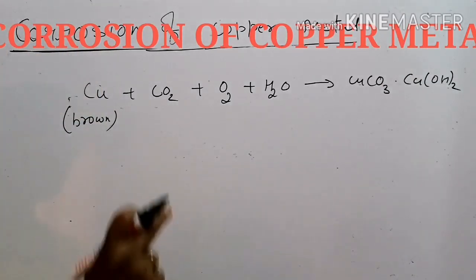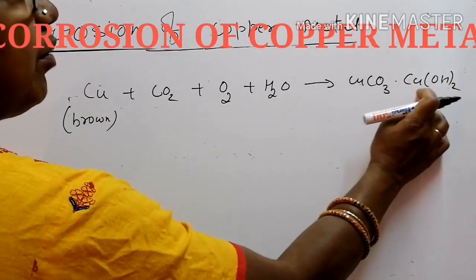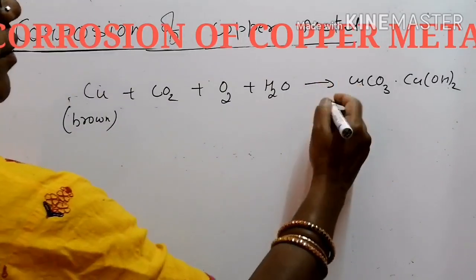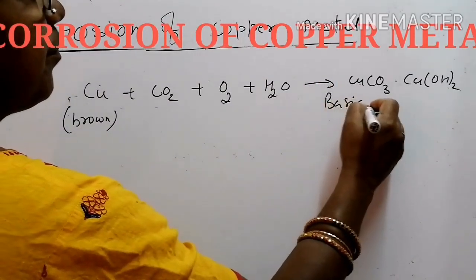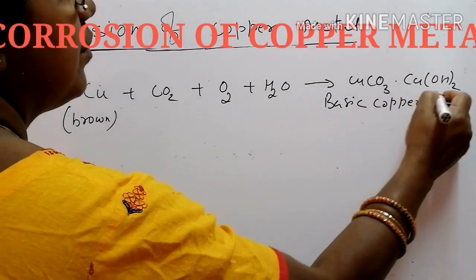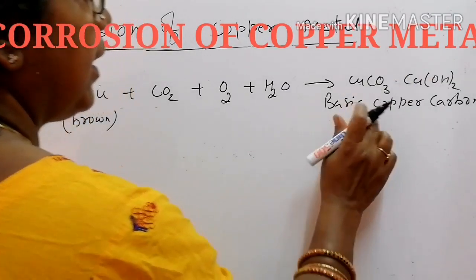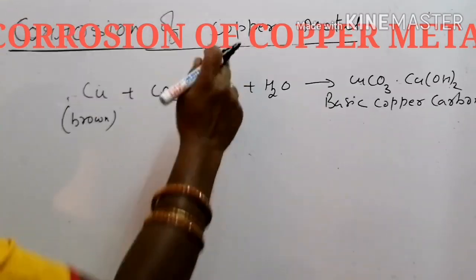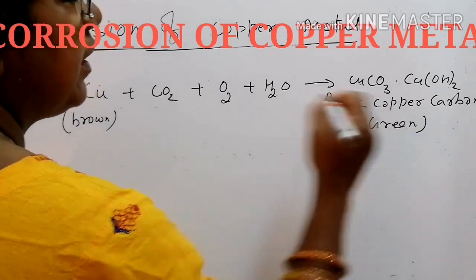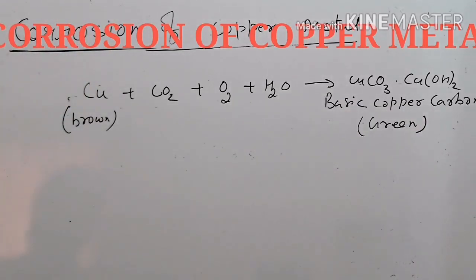When we are talking about basic, that stands for copper hydroxide. Basic copper carbonate. And this is called corrosion of copper. The basic copper carbonate formed is green in color.